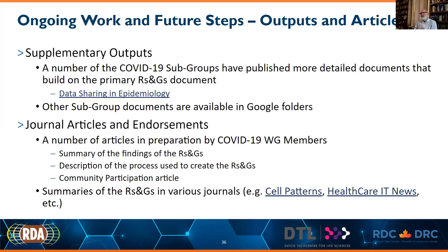The community participation team, which was a very challenging piece to integrate given its broad and interdisciplinary nature, is also working on an article. There have also been a few already published summaries of the guidelines and recommendations — for example, in the journal Cell's special section called Patterns, and in Healthcare IT News. There are also a series of endorsements and statements from various stakeholders willing to promote the guidelines and recommendations to their specific communities, whether publishers, funders, or policymakers.